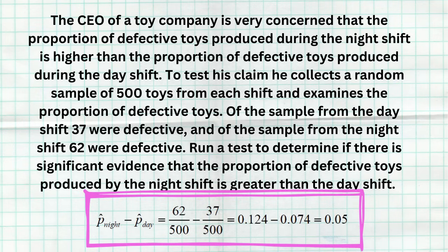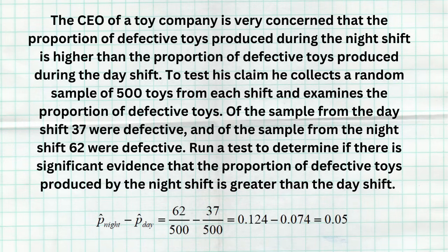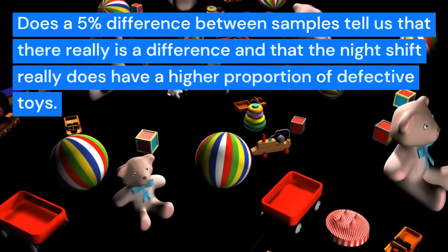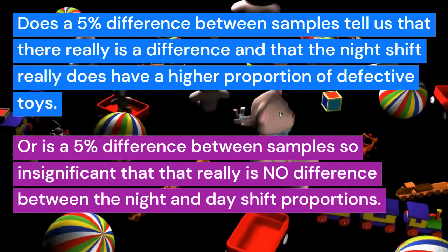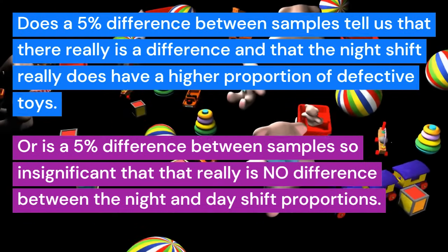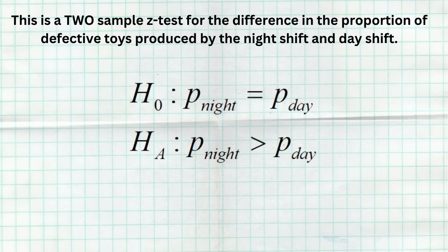The question is: is that 5% difference significant, or could it just be sampling variability? Because samples are allowed to vary — just because we observe a 5% difference doesn't mean there is a true 5% difference. Step one: this is a two-sample Z test for the difference in the proportion of defective toys produced by the night shift and day shift. Null: p_night equals p_day. Alternative: p_night is greater than p_day.